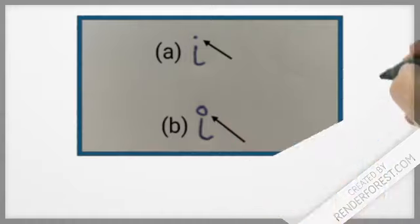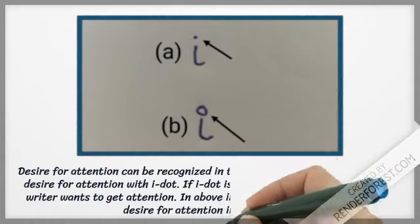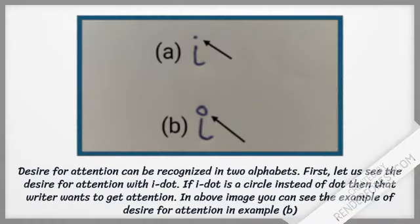Desire for attention can be recognized in two ways. First, let us see desire for attention with the I dot. If the I dot is a circle instead of a dot, then that writer wants to get attention. In the above image you can see the example of desire for attention in example B.